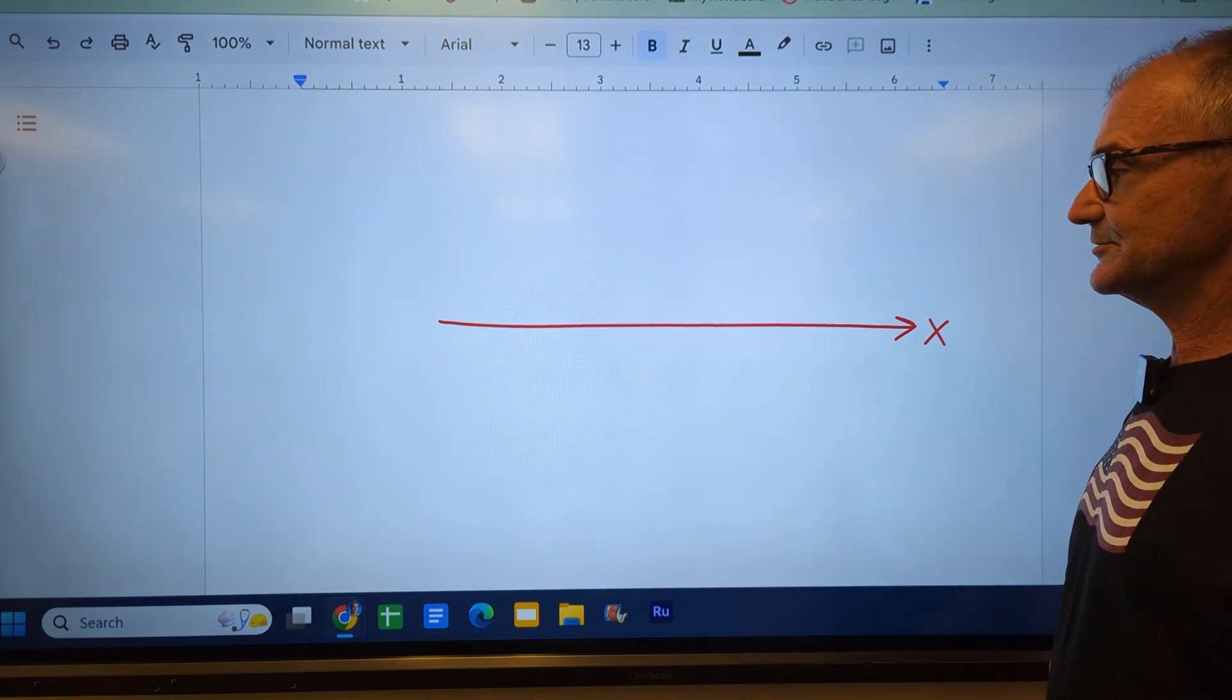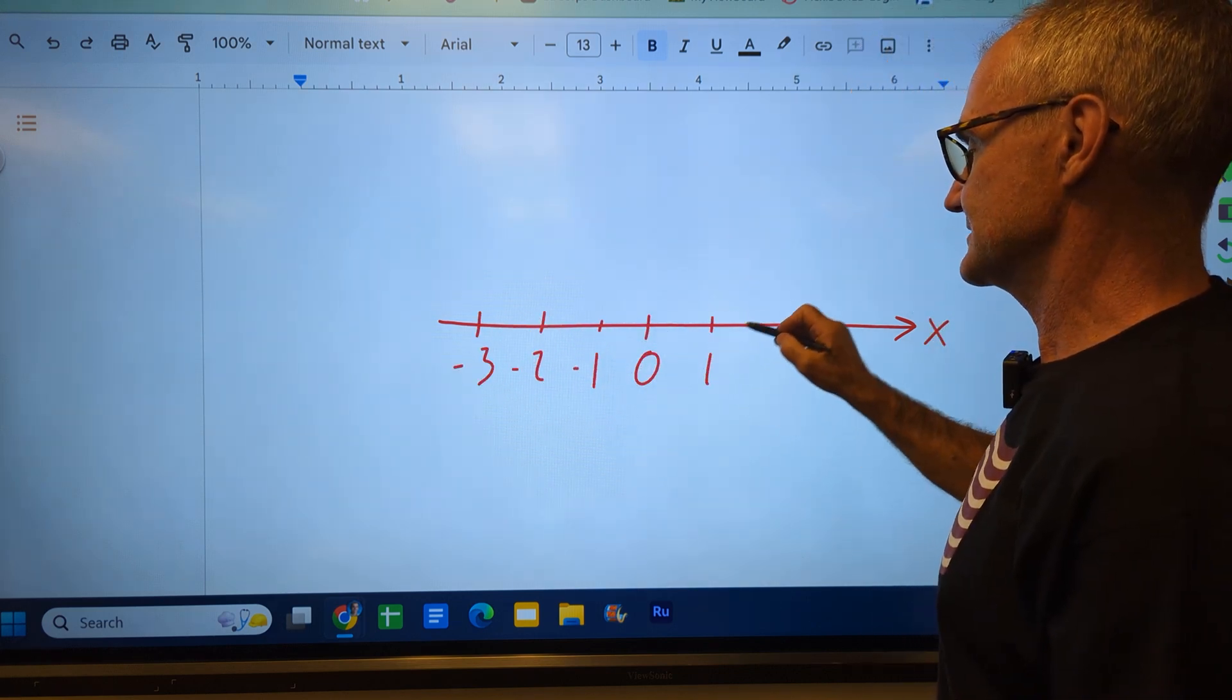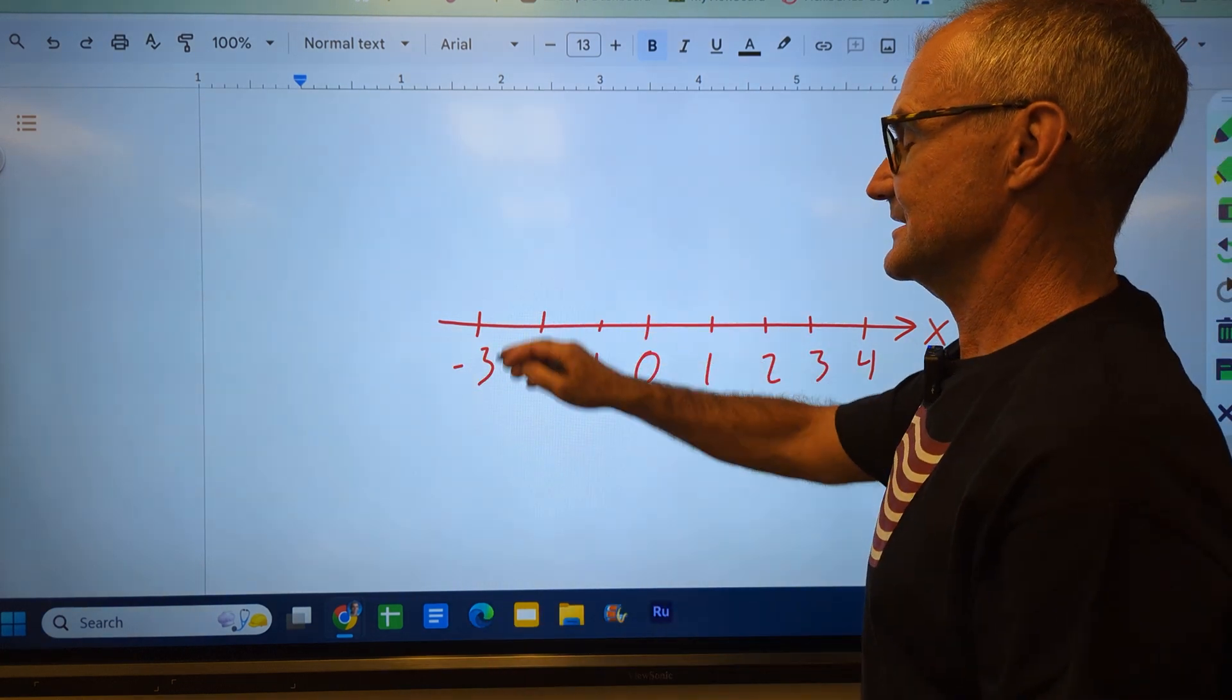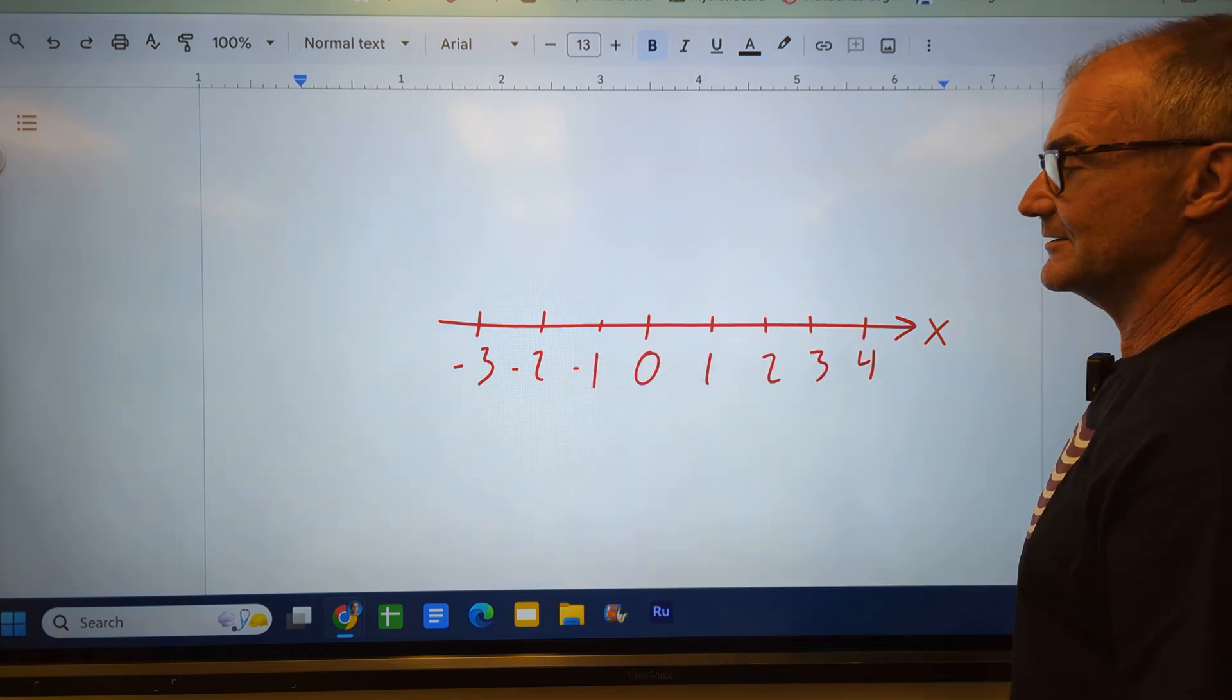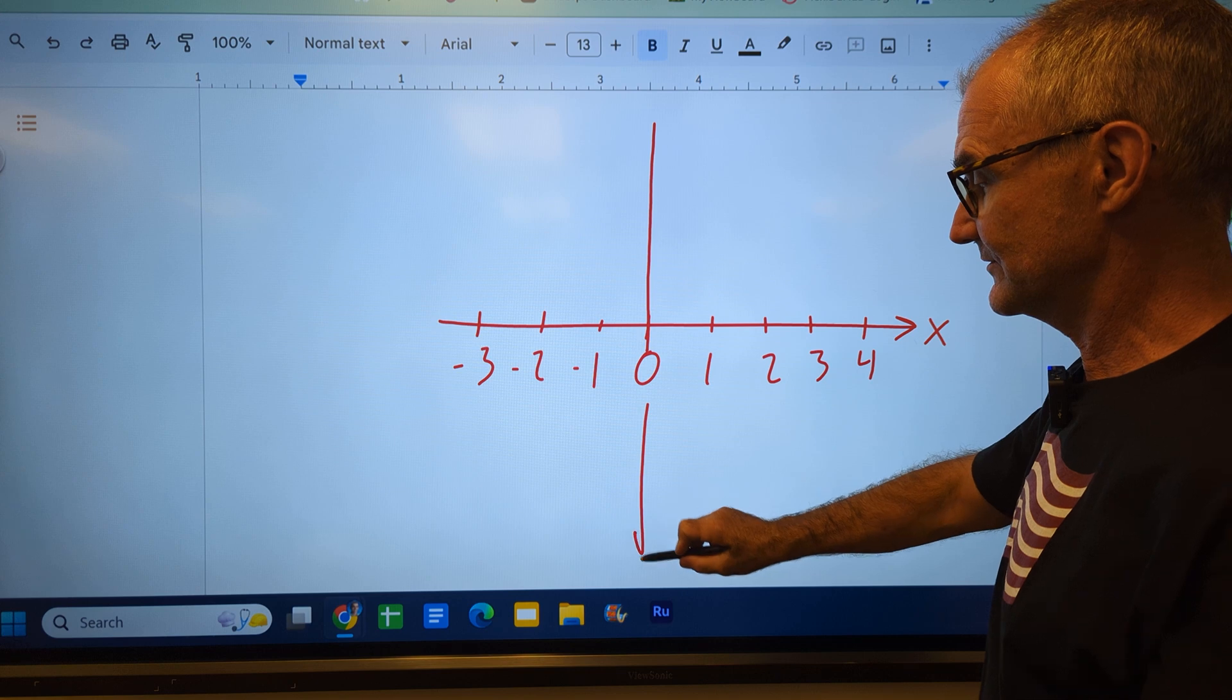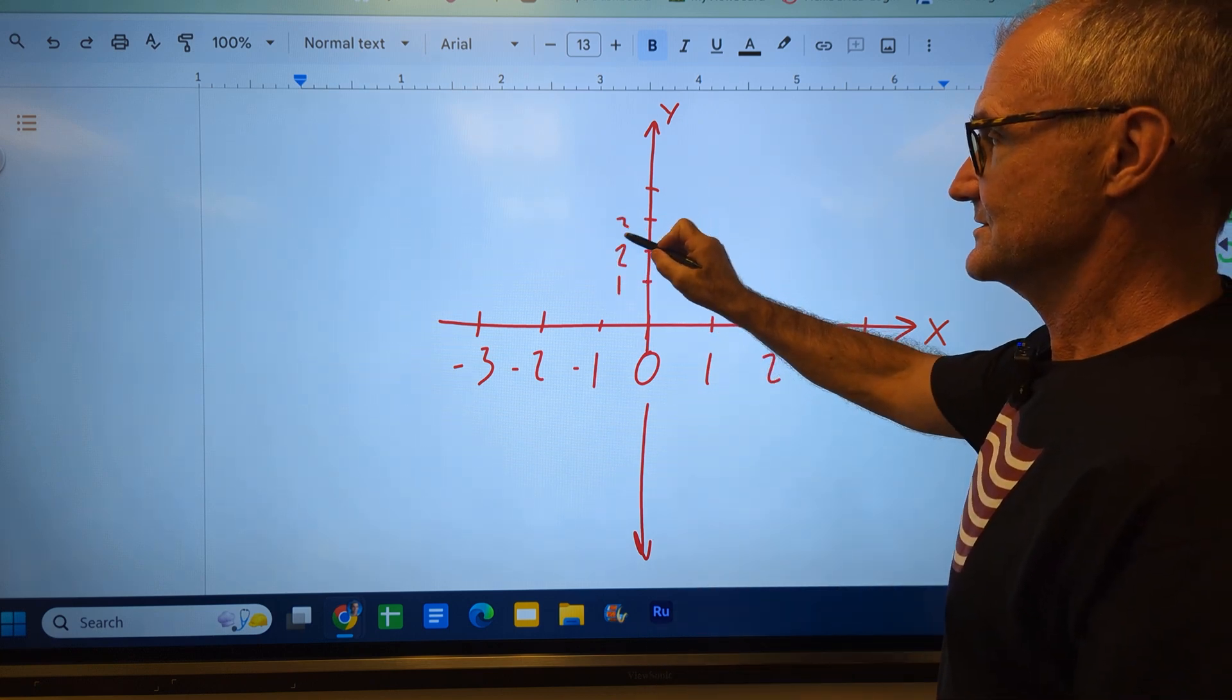Remember with addition and subtraction, we started with the number line. Right here is 0. Going this way is negative 1, negative 2, negative 3. This way is positive: 1, 2, 3, 4. And then rolling a wheel this way, going positive is clockwise, going negative is counterclockwise. We later call that number line x to say it could be any number or independent variable. Going to multiplication and division, we're adding a new dimension or a new axis to it. So now we're going to call this y.